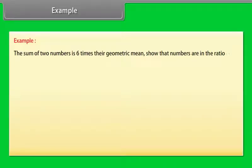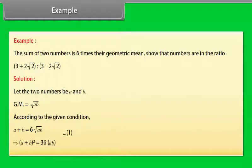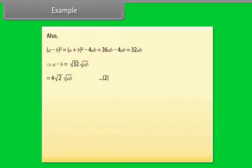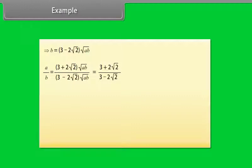Example: The sum of two numbers is 6 times their geometric mean. Show that the numbers are in a certain ratio. Let the two numbers be A and B. Given A + B = 6√(AB) — equation 1. Squaring gives (A+B)² = 36AB. Since (A−B)² = (A+B)² − 4AB = 36AB − 4AB = 32AB, we get A − B = 4√2·√(AB) — equation 2. Adding equations 1 and 2 and substituting, A/B = (3 + 2√2)/(3 − 2√2).